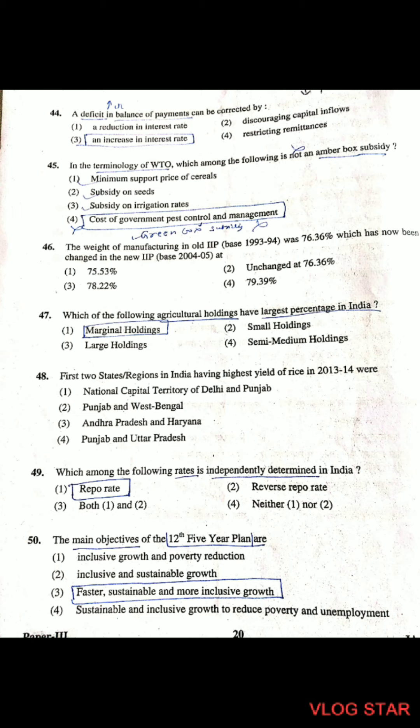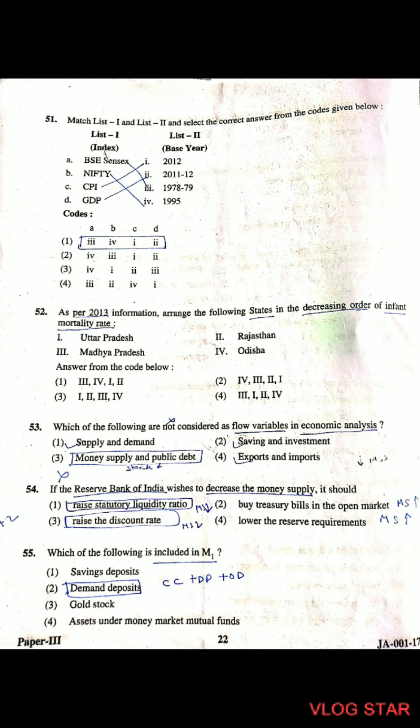Question 50: The main objectives of the 12th Five-Year Plan are faster, sustainable, and more inclusive growth. Question 51: Matching — BAC census 1978-79, Nifty 1995, CPI 2012, GDP 2011-12. The correct matching is A-3, B-4, C-1, D-2.